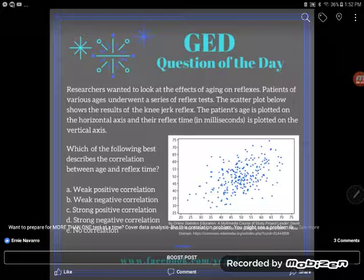So let's take a look at this problem. It says researchers wanted to look at the effects of aging on reflexes. Patients of various ages underwent a series of reflex tests. This scatter plot below shows the results of the knee-jerk reflex. The patient's age is plotted on the horizontal axis.